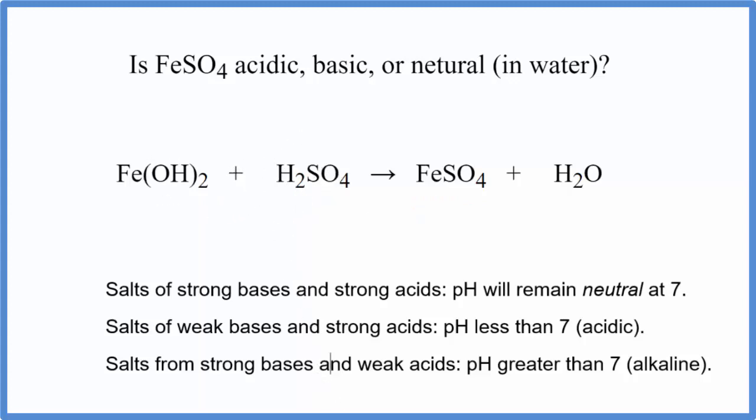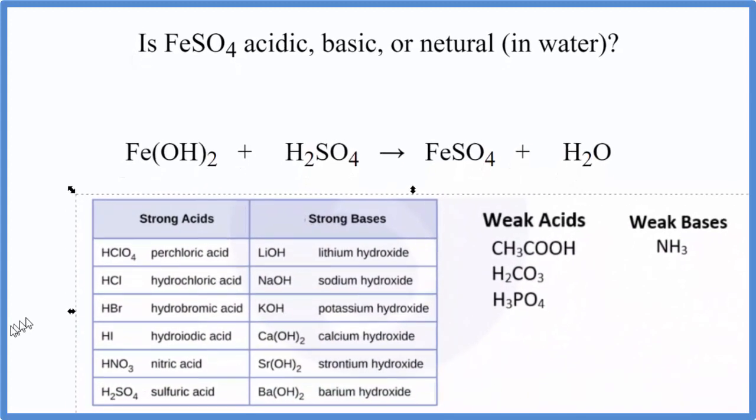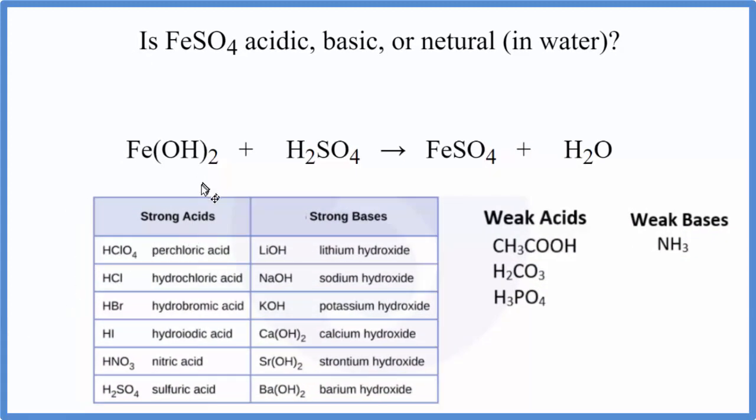A good way to do that is to use this table here. So we look at the table - this is a good one to memorize. And we're going to look for iron 2 hydroxide here. And we don't see it over here, so if it's not on our list of strong bases, that means it's a weak base.